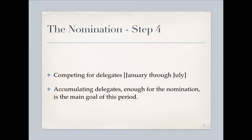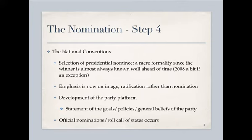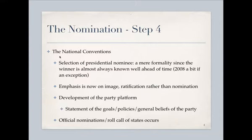The nomination runs from the very beginning of the year through July. The goal of any candidate is to accumulate enough delegates to win the nomination — that is the only goal. If they do this early, say by March, the convention that follows will basically be a formality. The last time that didn't happen was perhaps 2008, when Barack Obama was probably going to win but Hillary Clinton had quite a few delegates stacked up. Once you know you've won the nomination, the emphasis changes — now the focus is on looking like you can be and will be the president. It's no longer about ratification; it's all about image.